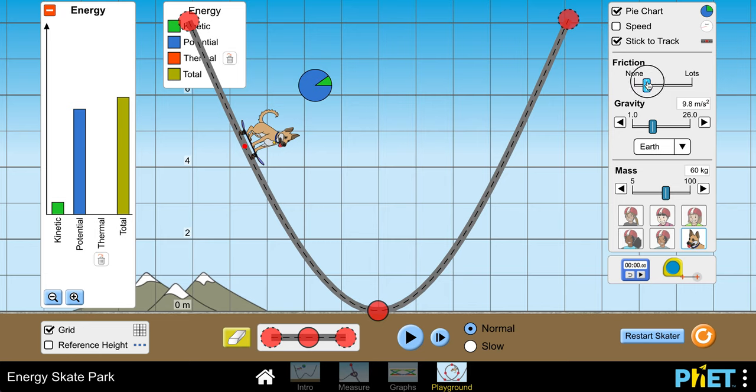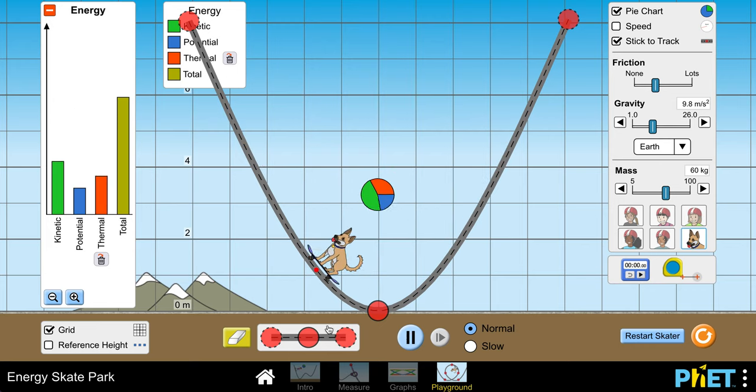I'm going to turn friction on. And that's kind of a real world thing. You should do the same. And then I'll set everything in motion. And it's interesting that then the red bar goes up, but only at certain times. And it doesn't go down like the potential and the kinetic.